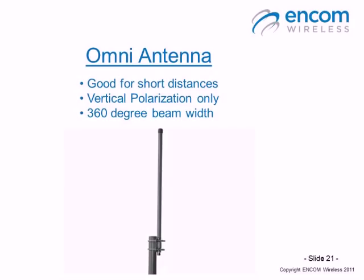The fourth antenna is the omni antenna, which gives a 360-degree beam width, but the trade-off is that it is only suitable for short distances. The omni antenna can also be vertically polarized only. In terms of distance, you would be looking at using it as a potential access point or for half a block or even less in range.